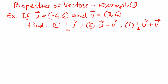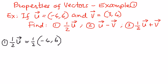Let us see that. The first one is we want to represent one-half of vector u. One-half is a scalar quantity, and the vector u has components negative 4 comma 6. The way we do this is as follows — we're going to use the distribution property and distribute this one-half to every one of the terms inside the parenthesis. So: one-half times negative 4 is negative 4 over 2, comma, one-half times 6 is 6 over 2.